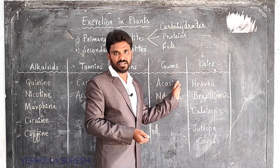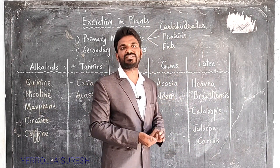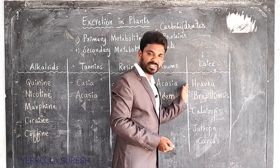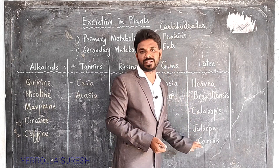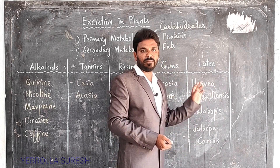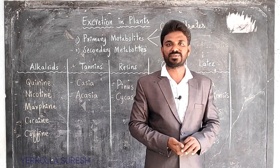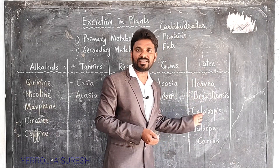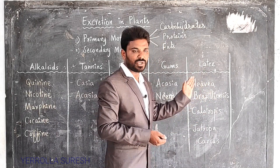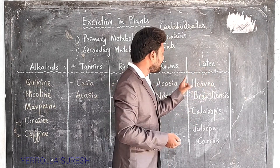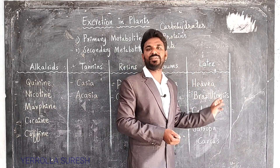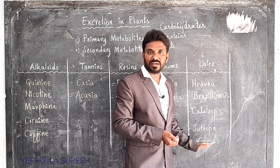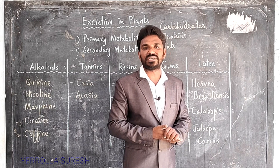Next, latex. Latex is a white, sticky, milky-white substance. It is excreted in plants like Hevea brasiliensis, Calotropis, and Jatropha curcas, where a milky white substance is secreted. Human beings identified the importance of latex from these plants and use it for different purposes. The latex from Hevea brasiliensis is used in the preparation of rubber, and the latex of Jatropha curcas is used in the preparation of biodiesel.